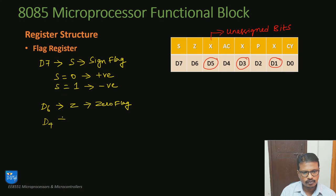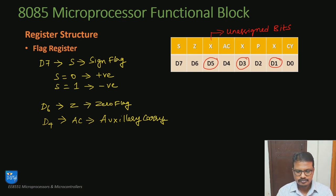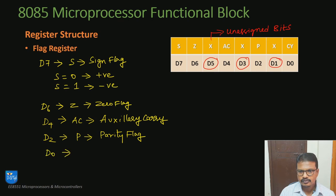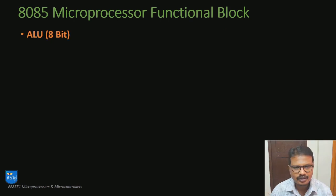D4 is AC, which stands for auxiliary carry. The auxiliary carry flag is set when a carry bit is generated during BCD arithmetic operations, and it is used internally by the 8085 microprocessor. D2 is P, the parity flag, which defines whether a binary number has even or odd parity. D0 is CY, the carry flag, which is set during arithmetic operations like addition or subtraction — whenever there is a carry or a borrow, this carry flag is set.